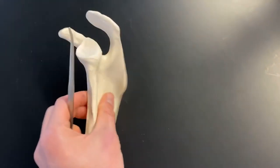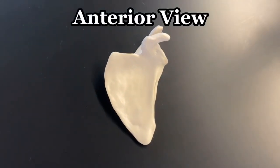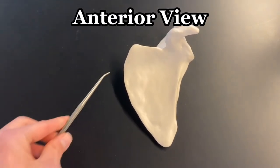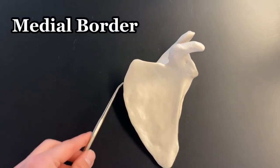All right, let's flip it to an anterior view. Anterior view. Now with this view, we can still see things like the medial border. Medial border.